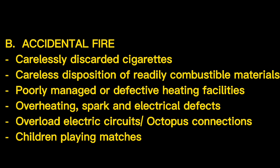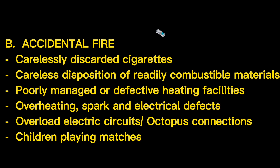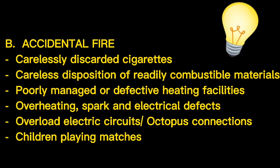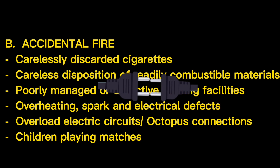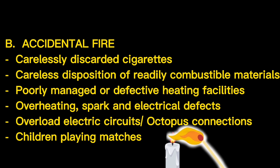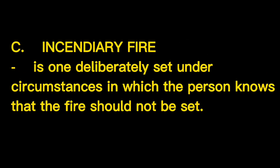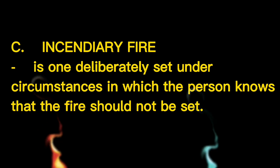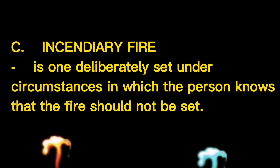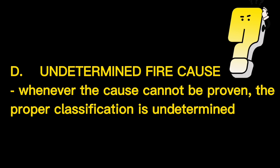Accidental fire examples: carelessly discarded cigarettes, careless disposition of readily combustible materials, poorly managed or defective heating facilities, overheating, sparks and electrical defects, overloaded electric circuits, octopus connections, and children playing with matches. Incendiary fire is one deliberately set under circumstances in which the person knows that the fire should not be set. Undetermined fire cause: whenever the cause cannot be proven, the proper classification is undetermined.